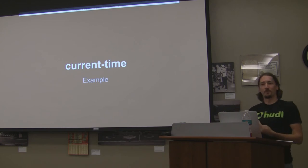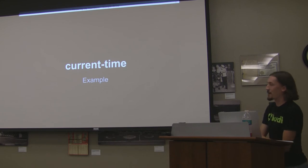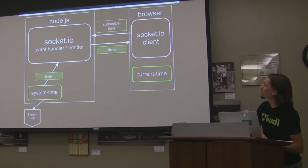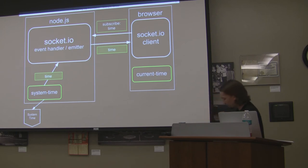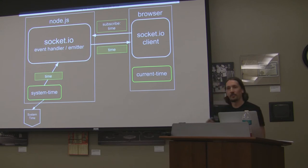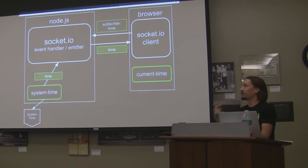Let's start with a fairly simple example of a nugget called 'current time.' This nugget will essentially display what the current system time is on the server. If we apply real names to the diagram: on the browser we have a current time display; we have a system time data source that grabs the time from the system. It's going to grab it at one-second intervals and emit a stat named 'time.' The browser client subscribes to 'time' and when it receives those events, it reacts and updates the page.